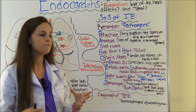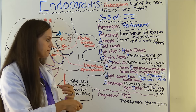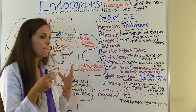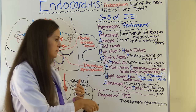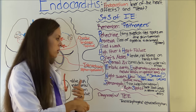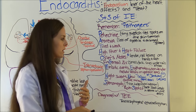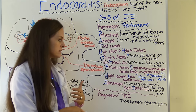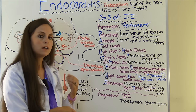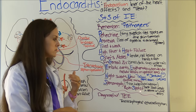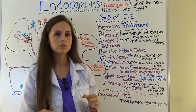S is for splenomegaly — the spleen is enlarged because it's helping fight infection. Another finding is Roth spots — when you look into the eyes, you can see bursts of blood vessels in the retinas with white centers.